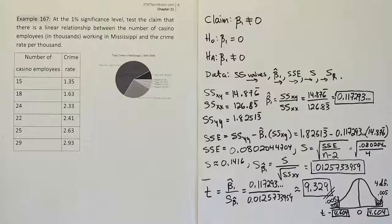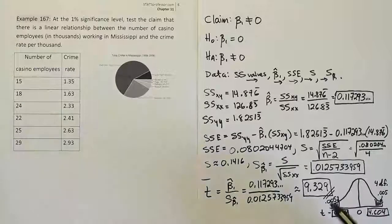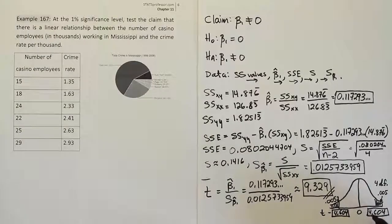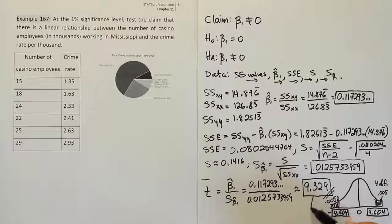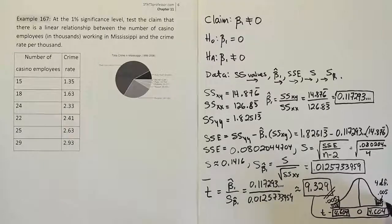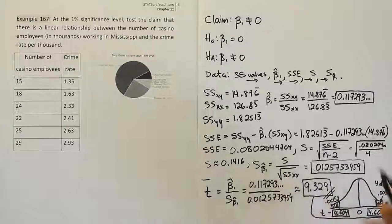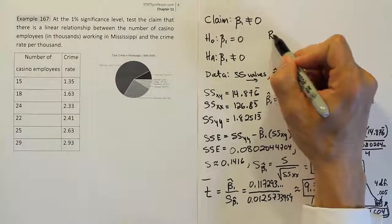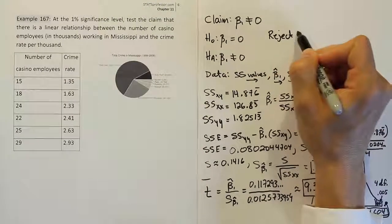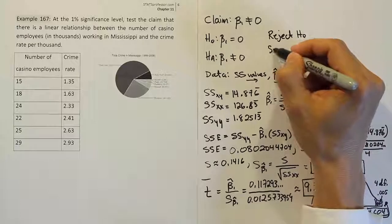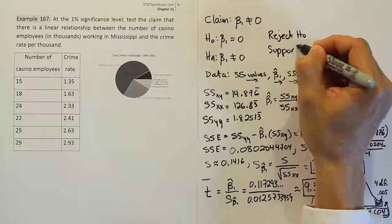Now we're going to compare our test stat to that. And obviously our test stat is much bigger than the critical value. Even though the critical value is pretty big, 4.6 is pretty far out there. But this number is by far further into the tail area. And because of that, we're going to clearly say that we reject the null hypothesis. So we'll say reject H₀ and therefore support Hₐ.